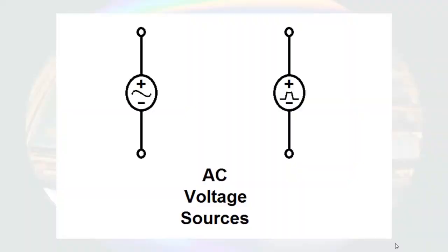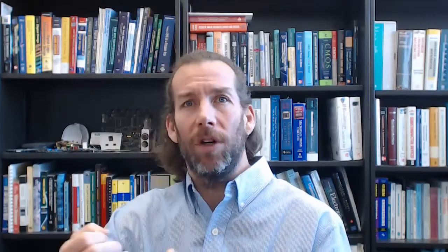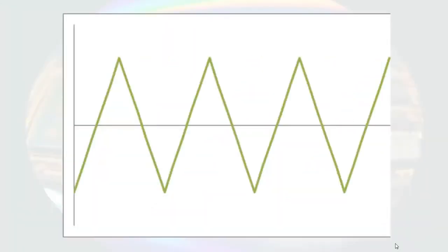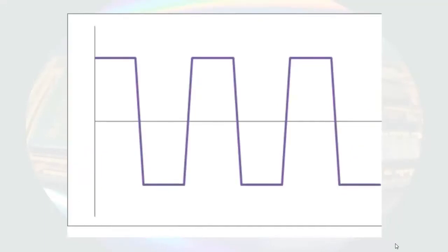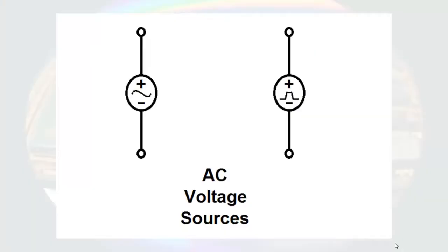There are also independent AC, or alternating current, voltage sources. Like all independent sources, their output is not affected by what is connected to them. Unlike DC sources, however, the voltage they output is not constant in time. The voltage signals may take the form of a sinusoid, a ramp wave, a triangle wave, a square-ish wave, or some other time-variant signal. The circuit symbols we use to represent AC voltage sources look similar to the generic voltage source, but in the center of the symbol there is a squiggle or a wave.